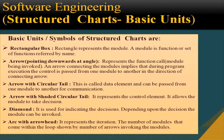Structure chart symbols or basic units include different symbols: a rectangular box, an arrow pointing downwards at an angle, an arrow with a circular tail, an arrow with a shaded circular tail, a diamond box, and an arc with an arrowhead. We have already studied the structure chart in previous videos — for details, please see the previous video on the structure chart.